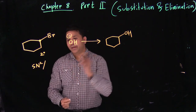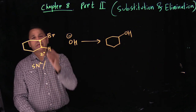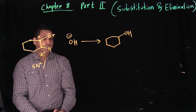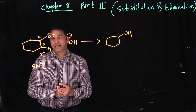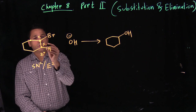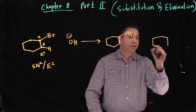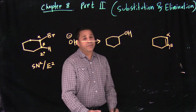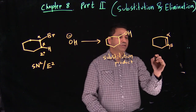For elimination, we need an alpha carbon with a leaving group and a beta carbon with at least one hydrogen. We have a hydrogen here — that's the alpha and that's the beta. Both sides are the same, so we can choose any beta. We have a strong base, so we do E2: the base picks up the hydrogen, the electron pair forms between alpha and beta, and the leaving group leaves simultaneously. The product has a double bond between alpha and beta — that's your elimination product.